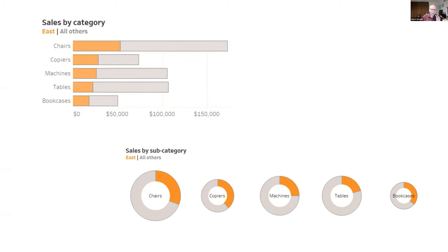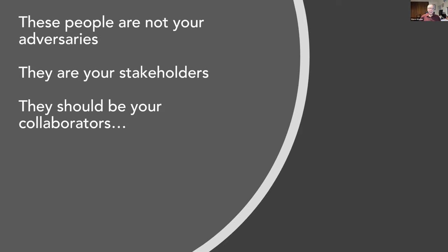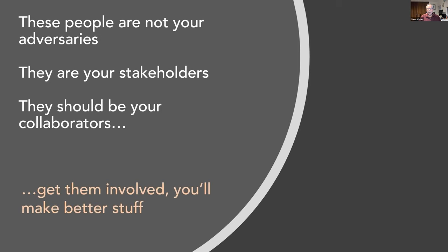The best of us in the data visualization community can make stuff that looks cool and is analytically just spot on. I always go for what is the thing that's going to allow you to see things sooner. As you have these discussions with your stakeholders, I want you to realize these people are not your adversaries — they're your stakeholders. And if you make them your collaborators, if you have a give and take, ask them: I've tried this, does this make sense to you? I've got two or three different effective ways I think I can show this — which one works best for you? Get them involved and you're going to make better stuff.